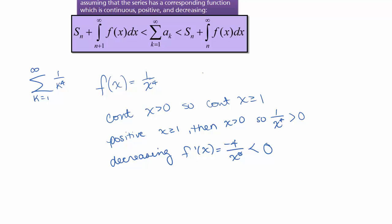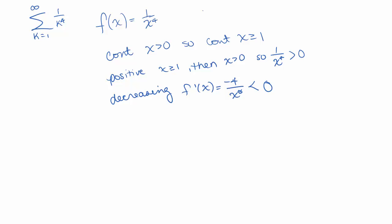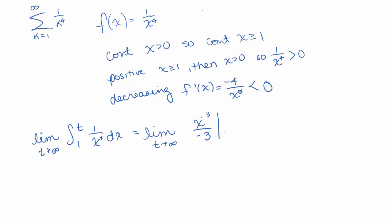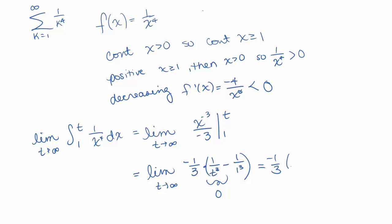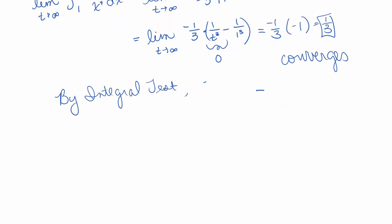That means we're allowed to use the integral test. The integral test tells us in this example that our series actually converges. We can look at the integral from 1 to infinity of 1 over x to the fourth dx. When we evaluate that integral, we get the limit as t goes to infinity of x to the negative 3 over negative 3, evaluated from 1 to t, which equals the limit as t goes to infinity of negative 1 third times 1 over t cubed minus 1 over 1 cubed. As t goes to infinity, 1 over t cubed goes to 0, so this equals negative 1 third times negative 1, which is 1 third. The integral converges, and therefore by the integral test, the series converges.